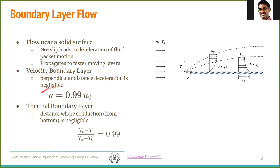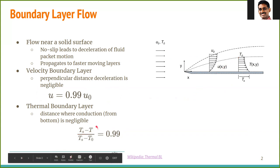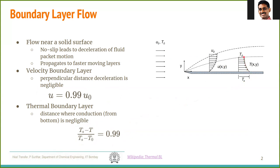This is for the velocity boundary layer. We could also have a thermal boundary layer, in which case we have a fluid entering at temperature T0, uniform throughout, but the plate is maintained at a surface temperature Ts — say Ts is greater than T0. Very close to the surface, the temperature of the fluid equals Ts; very far away, it equals T0. The thermal boundary layer thickness is defined as the distance at which the temperature difference is 99% of the maximum difference, which is Ts minus T0.